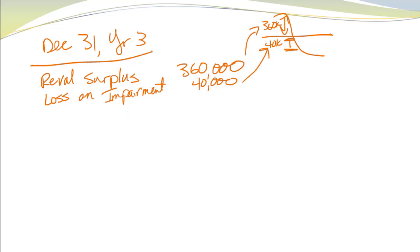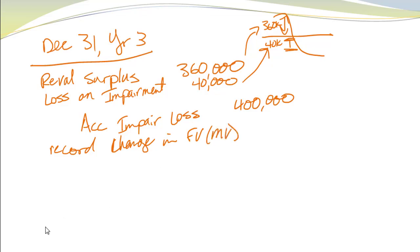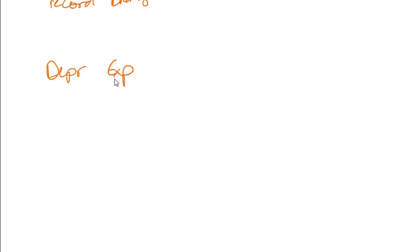The nice thing about recording a loss is I don't have to go through the steps of accumulated impairment, accumulated depreciation, and PP&E. I just put it all into accumulated impairment losses to record the change in fair value. I also need to record depreciation for the period.